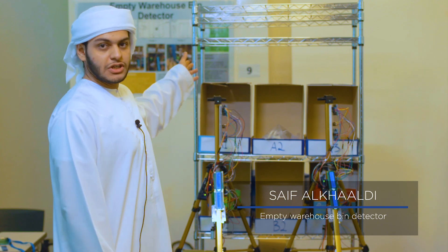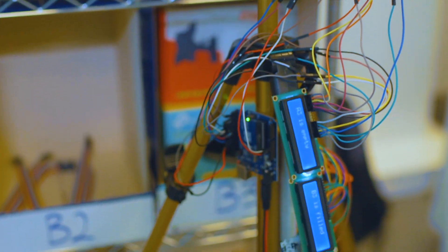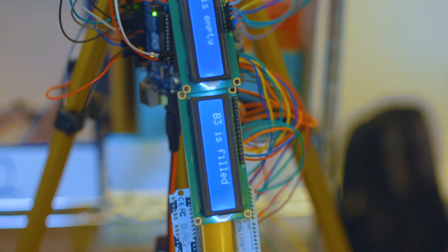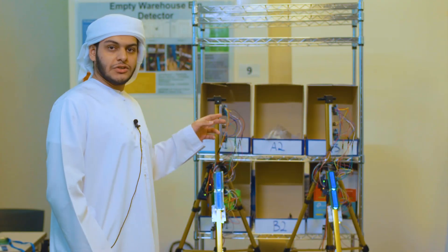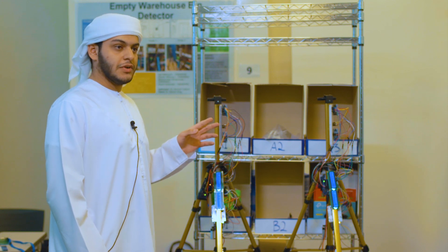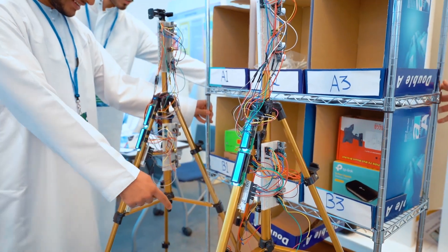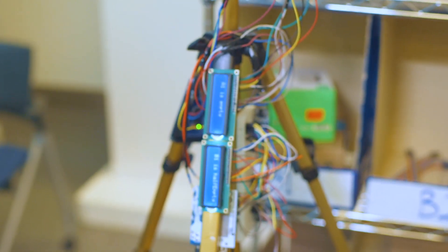This is our project called the empty warehouse bin detector. Distribution centers have thousands of these storage ports, and it is crucial for them to know which ones are empty and which ones are filled so that the empty ones are sent for refilling. We use ultrasonic sensors to detect if the bins are empty or filled. We use two ultrasonic sensors for each bin, and they can detect if it is empty, half empty, or filled.